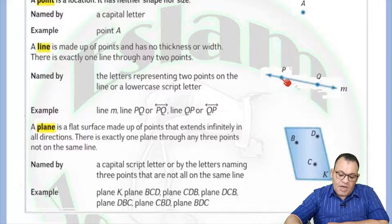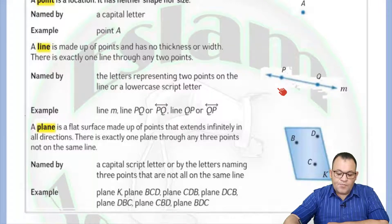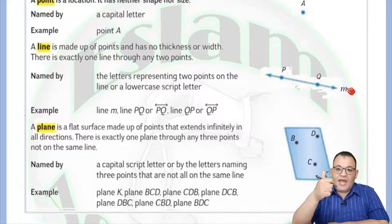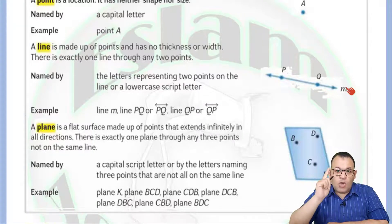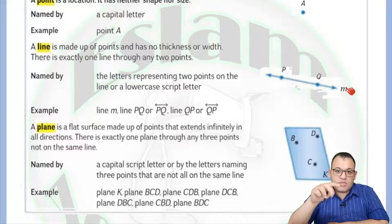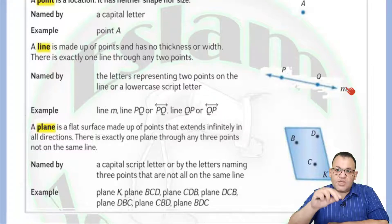So we have here a line PQ, or we can say that this line is QP. Or we can say we have a line M with a small letter. So the name of a point must be a capital — only one capital. The name of a line is defined by two capital letters for the two points which are located on this line, or one small letter.